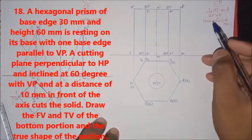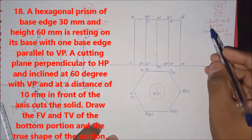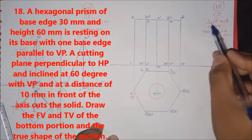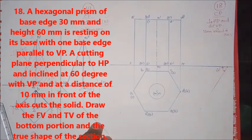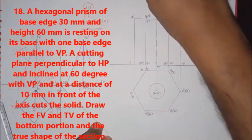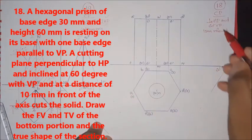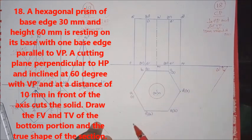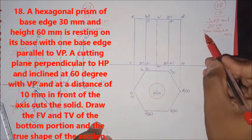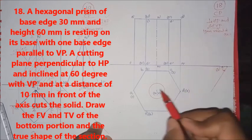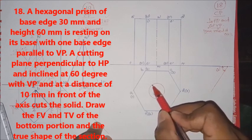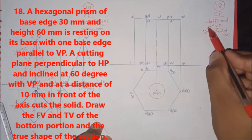Question number 18. This cutting plane is perpendicular to HP. So we have to cut this out at 60 degrees to VP, and cut this out 10mm in front of the axis. So we have to get 10mm in front of the axis, so 10mm parallel here at 60 degrees.